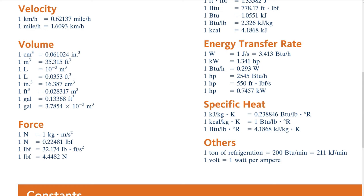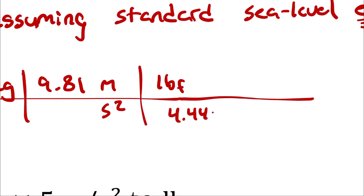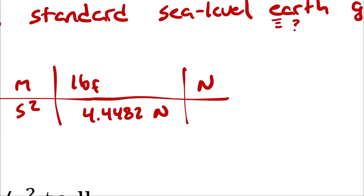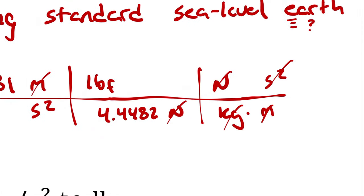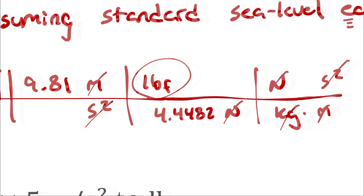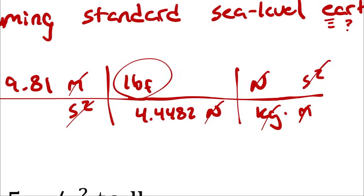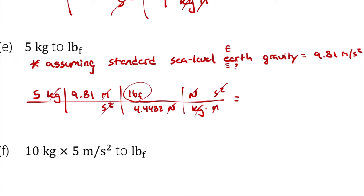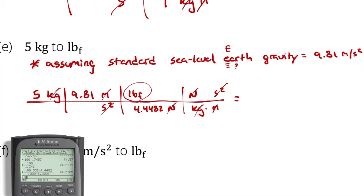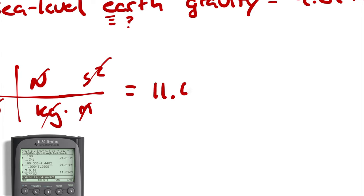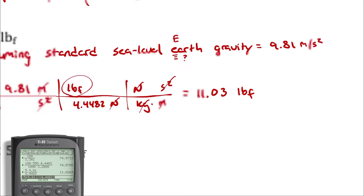Pound of force could be written as 32.174 pounds of mass times feet per second squared, or as 4.4482 newtons. I will write it as 4.4482 newtons, then explode newtons into 1 kilogram meter per second squared. Newton cancels newton, kilogram cancels kilogram, meters cancels meters, second squared cancels second squared, and I'm left with pounds of force. So 5 times 9.81 divided by 4.4482 yields a result in pounds of force — about 11.03 pounds of force.